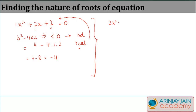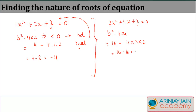The third equation is 2x squared plus 4x plus 2 equals zero. Finding b squared minus 4ac: b is 4, so 4 squared gives 16, minus 4 times a (which is 2) times c (which is 2), giving 16 minus 16 which equals zero. So for this equation the roots are real and equal.